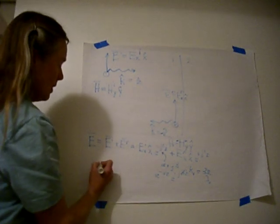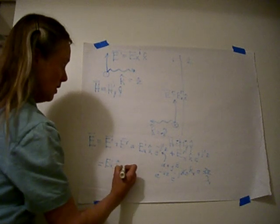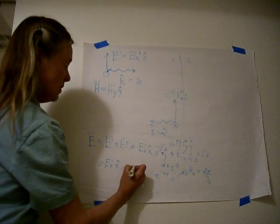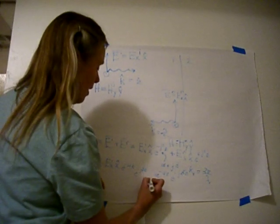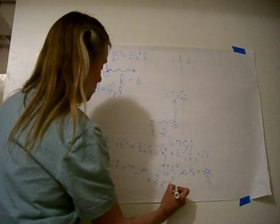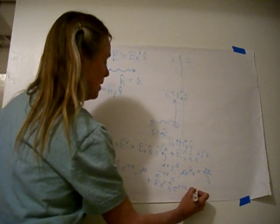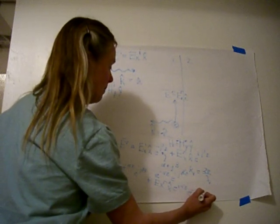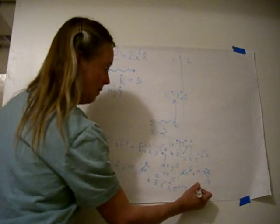So I can rewrite this electric field equation as Ex incident in the x direction, e to the minus alpha z, e to the minus j beta or kz plus Ex reflected, also in the x direction, e to the minus alpha z plus alpha z, e to the plus j beta z. So there is my electric field in region number one. Let's replace beta with k1 just for consistency.